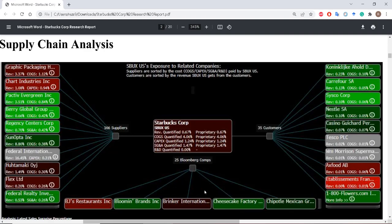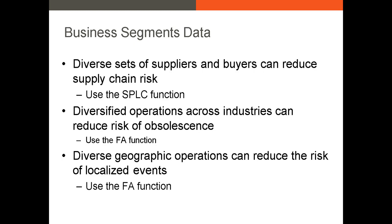The way Bloomberg identifies competitors is a combination of correlation of returns and industry codes. I tend to prefer the correlation method — just looking at the firm with which your firm has the highest correlation. In the case of Starbucks, as of the time I pulled this data, Starbucks' closest competitor was McDonald's. In addition to using the SPLC function, we can also use the FA function to analyze the various industries and geographic locations where a firm operates. The downside is that if a firm doesn't have at least 10% of its operations in a given industry or geographic area, it likely won't report sales data for that segment.